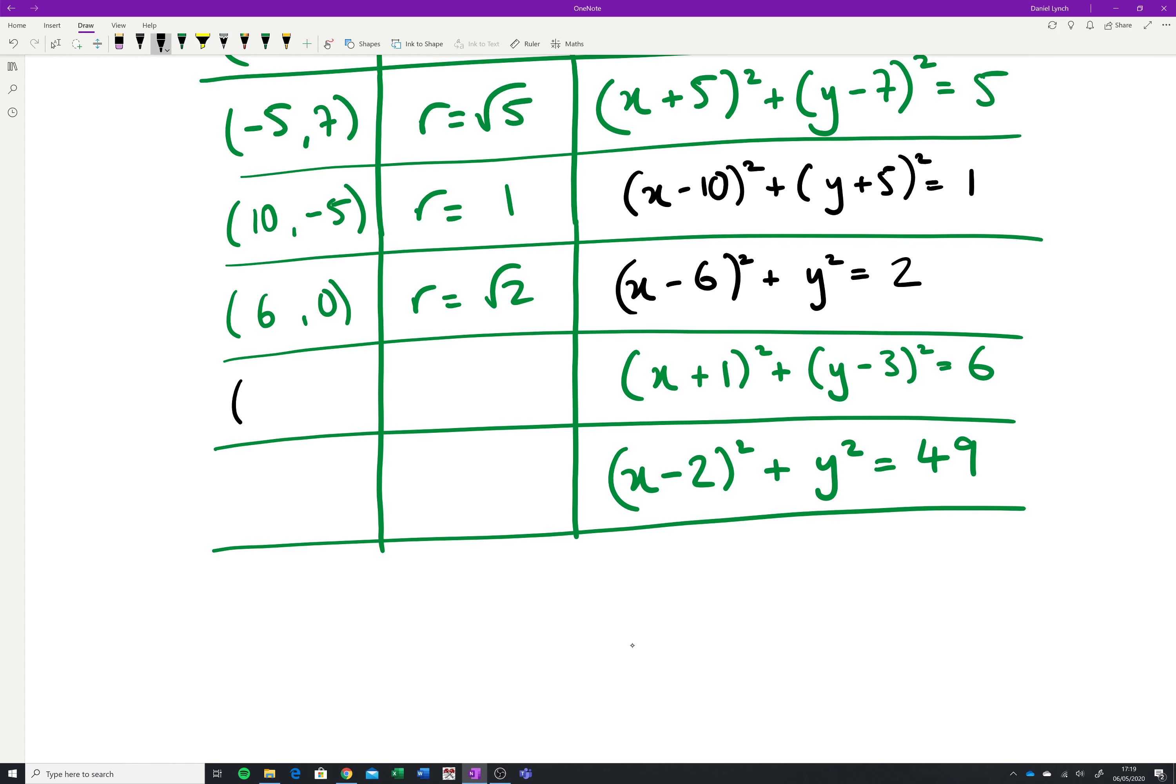Over here to get our center we have minus 1, we have 3, again it's the signs just changed, and the radius is equal to root 6.